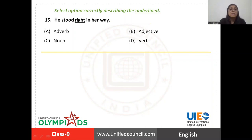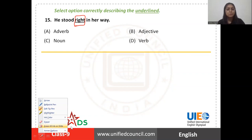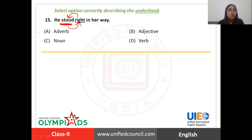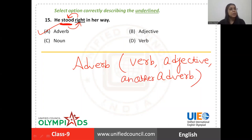Question number fifteen: 'He stood right in her way.' Is the underlined word 'right' an adverb, adjective, noun, or verb? It depends on the word it is qualifying. In this sentence, 'right' is qualifying the verb 'stood' — how did he stand? Right. So 'right' is qualifying this verb. The word which qualifies a verb is called an adverb. An adverb is the word which qualifies a verb, an adjective, or another adverb. So the answer is option A: adverb.